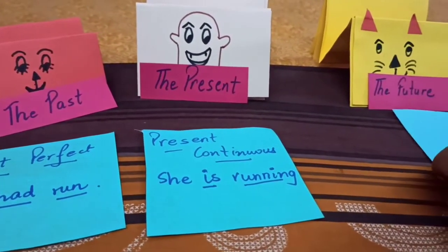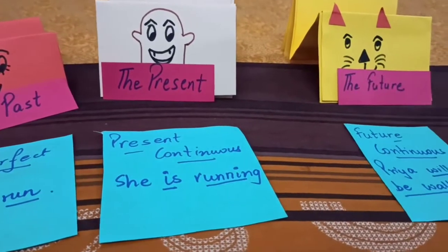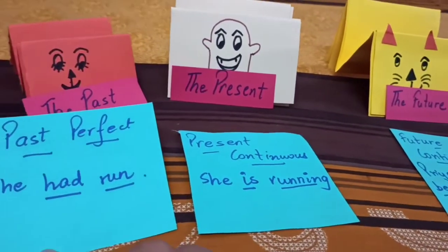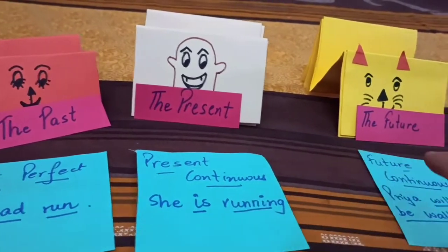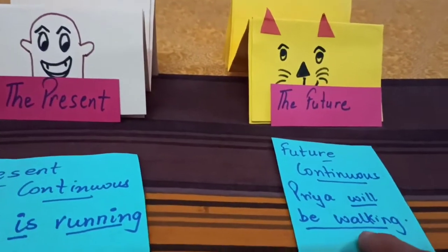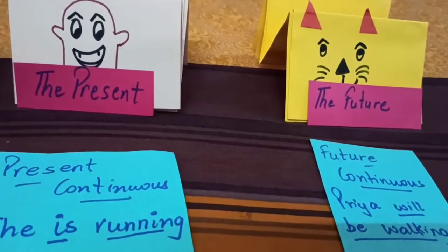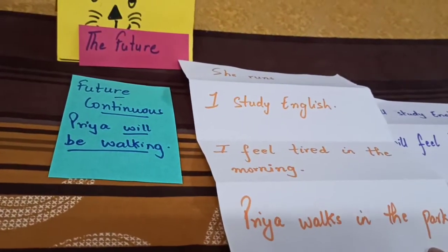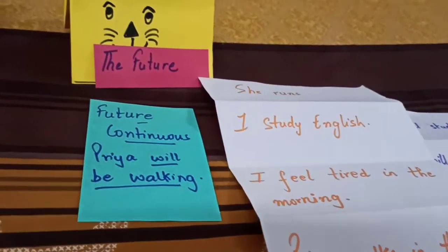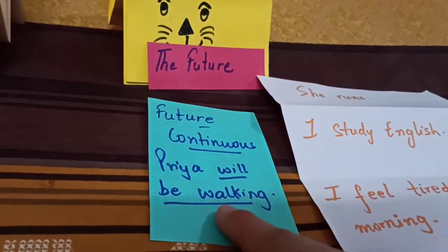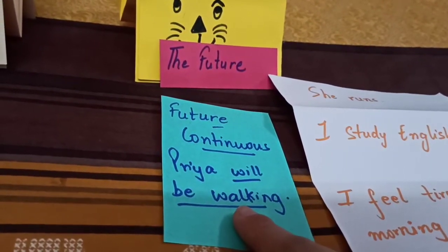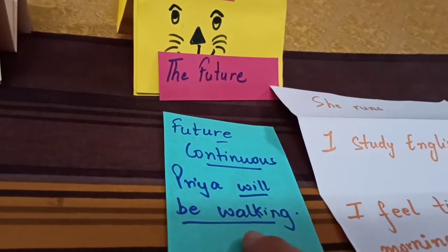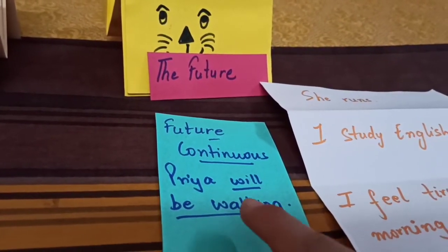Future calls its friend — future continuous. Future continuous says: you are telling about past perfect and present continuous; I will also tell about future continuous. The action which is started in the present — Priya walks in the garden — do you know if the action has got over in the future? No, because Priya is still walking. Priya will be walking. So in the future also, she will be walking. Future continuous tells us of an action which will be going on in the future.